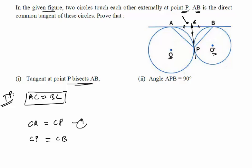Again using the same theorem that tangents are of equal length from an external point, we get CP is equal to CB. From these two equations, we can conclude that CA should be equal to CB, which proves our first result. Let us move to the second part of this question.